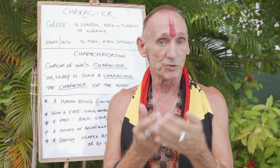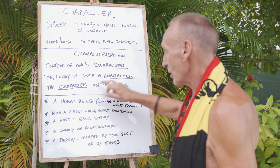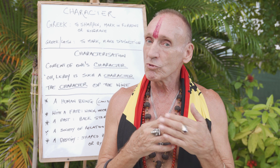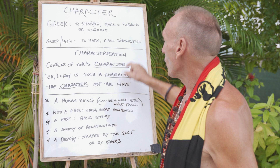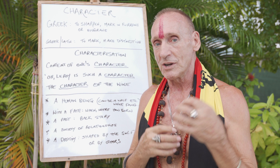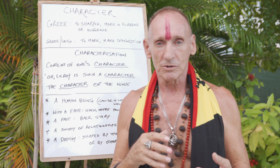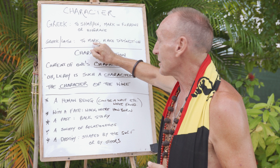So here we have, in characterization, the content of one's character. You get a phrase like, 'Oh, Leroy, he's such a character.' We already get the idea of Leroy as being a distinctive person. Remember, we go back to mark or make distinctive in characterization. Then you get a phrase like 'the character of the wine' — what do they mean by that? We're going back to the distinctive qualities of it that mark it as uniquely itself.